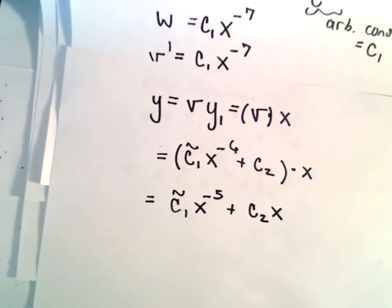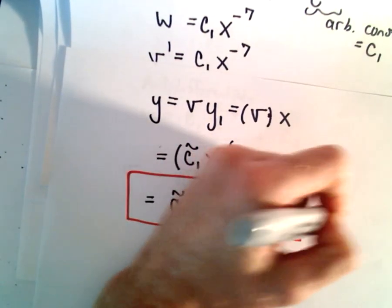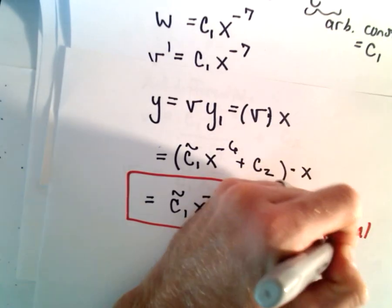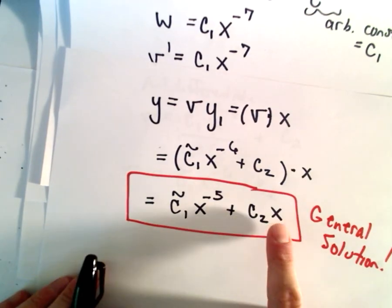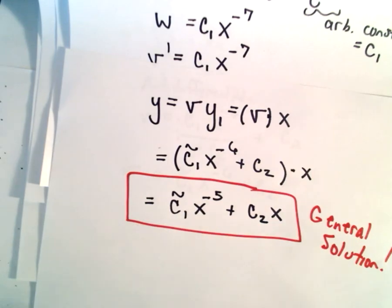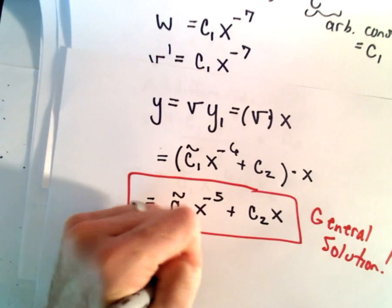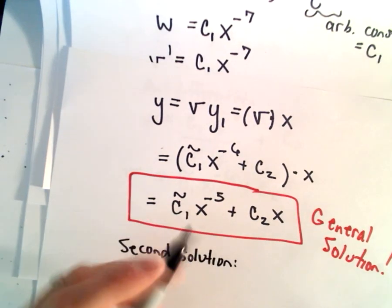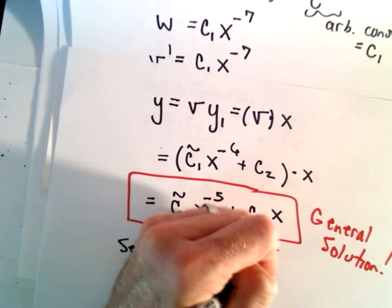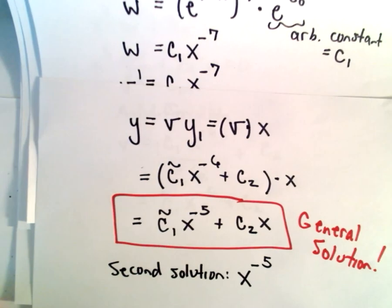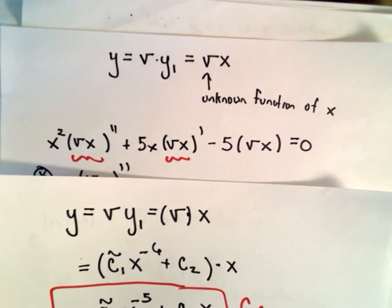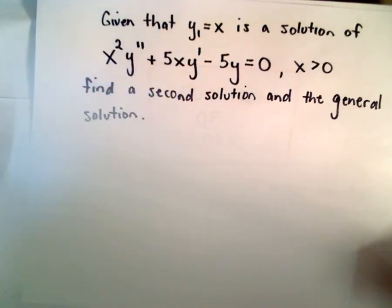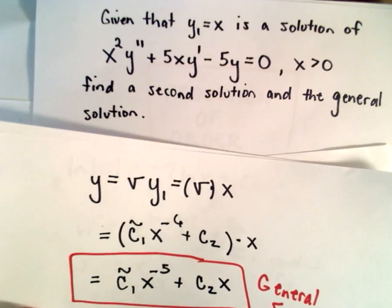This is now our general solution. We already knew that x was one of our particular solutions. So the second solution is simply the other term: x to the power of negative 5. If you want to verify, you can always go back and plug that into the original differential equation and make sure it works out.